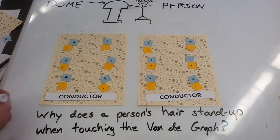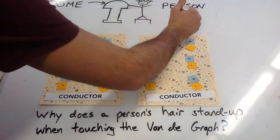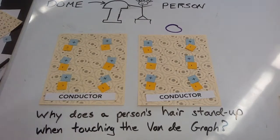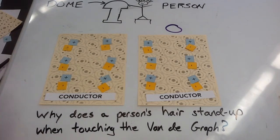To start off with, our person is going to be neutral. There's an equal amount of electrons and protons.